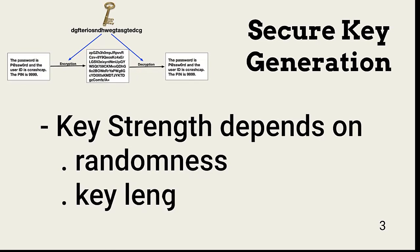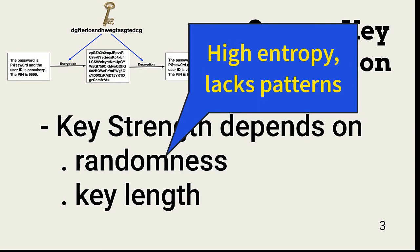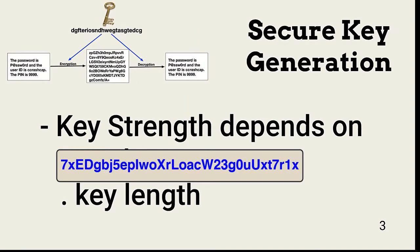Secure key generation addresses the strength of a key. Key strength is determined by two things: the randomness of the key and the length of the key. As with all cryptography, patterns are bad. This includes the capability to guess a key based on previous keys or the key generation method used. Consequently, keys should be generated using a random key generator. This is an example of a 256-bit random key we could use for the AES-256 block cipher.